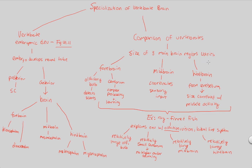If you compare the ray-finned fish with birds or mammals like us, we actually have a relatively large forebrain. This is because birds and mammals are capable of complex cognition — thinking, understanding the environment, and problem-solving — which is represented by a large relative forebrain, specifically a large cerebrum. That covers the specialization of the vertebrate brain. In the next video, we'll focus on the cerebrum and why it supports complex processing and learning.